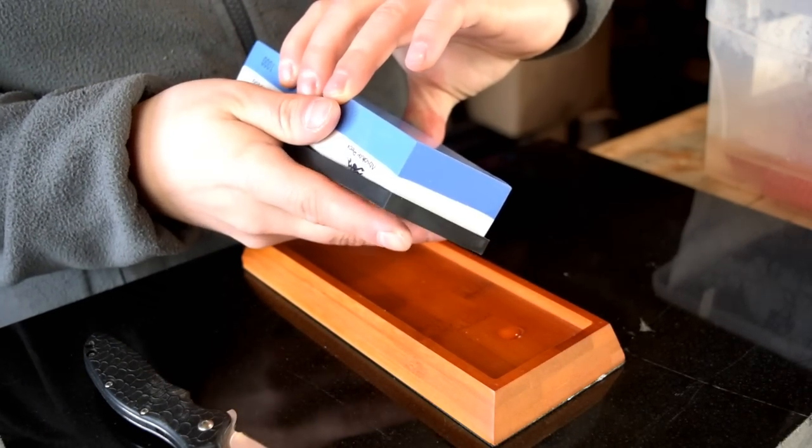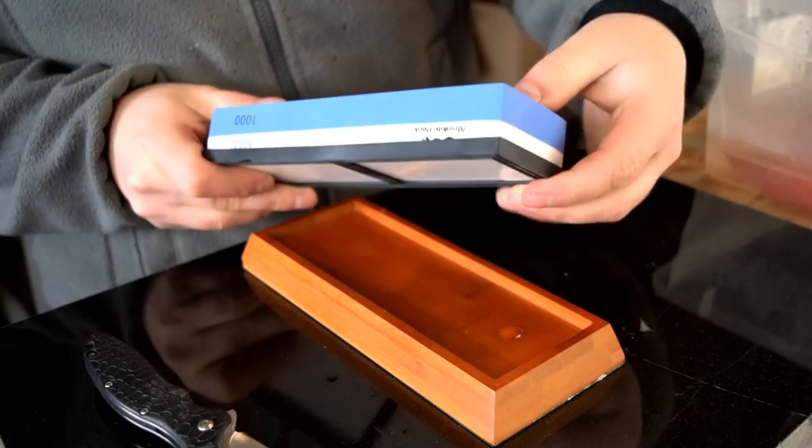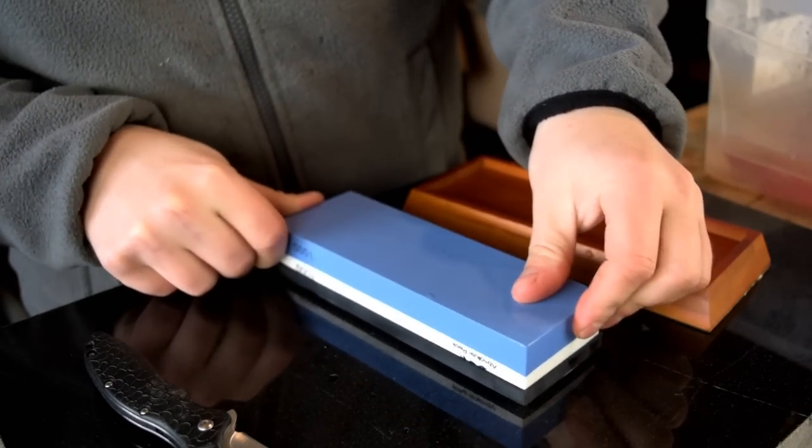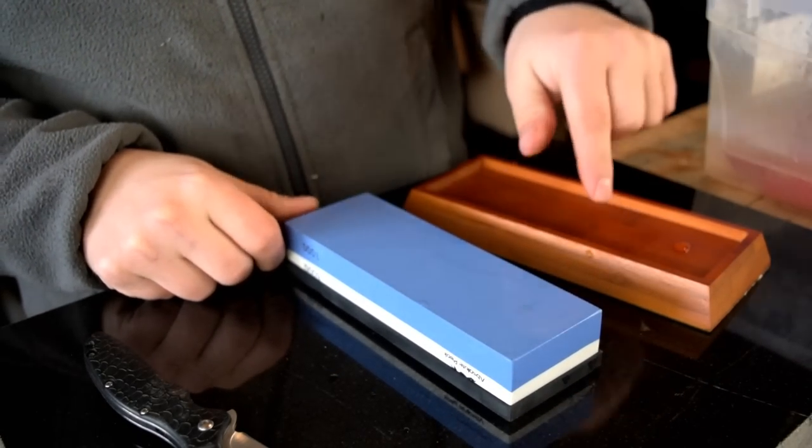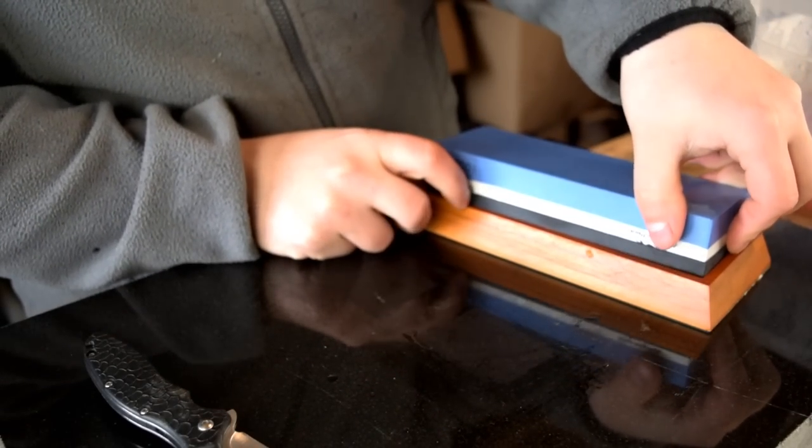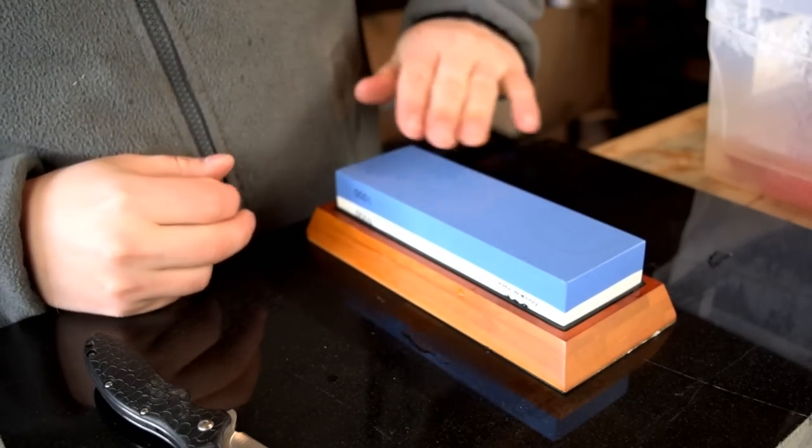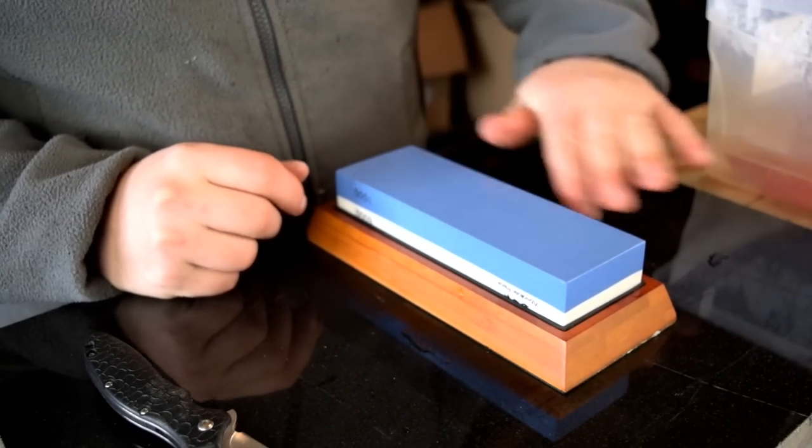I'm gonna haul it out here, throw this little base back on it. I guess technically with that rubber base you could use it without this here because notice it goes all the way around the bottom, so that would be fine. I'm gonna use a stone holder because I really like this stone holder - gets it up, gets your hands up off the table.